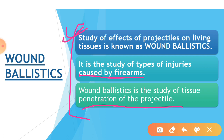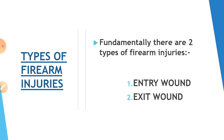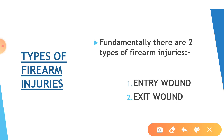So here we cover wound ballistics. Internal, external, and terminal ballistics we have talked about previously. Basically, here we focus on wound ballistics — simply the effects and injuries a projectile causes on living tissue. Now let's see how many types of firearm injuries there are. The fundamental types are two: entry wound and exit wound.